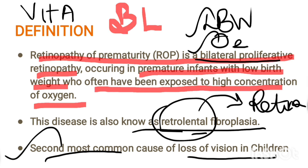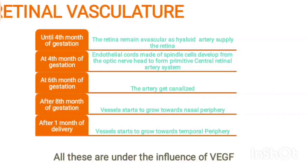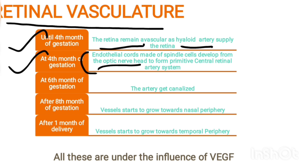Regarding retinal vasculature embryology: until the 4th month of gestation, the retina remains avascular and is supplied by the hyaloid artery. At the 4th month of gestation, endothelial cords arise from the optic nerve head.